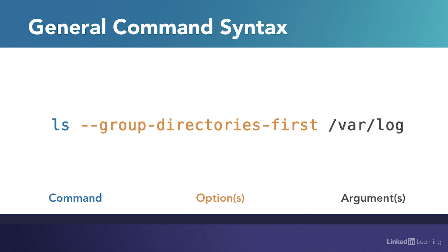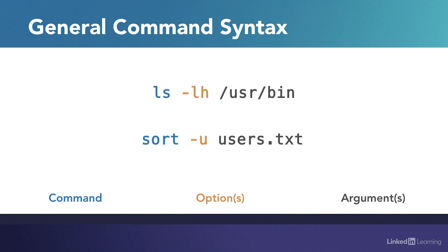Options that have two dashes can't be combined together — they have to go one right after the next, separated by a space. The last portion of a statement is the argument or arguments. This is where you tell the command what thing to operate on — usually a file path or a set of files or folders. For example, we're telling the ls command to show us the contents of the usr/bin folder, and further down we're telling the sort command to sort a file called users. That's it for the basic syntax of commands. Understanding this basic pattern will help you learn and use unfamiliar commands in the future.